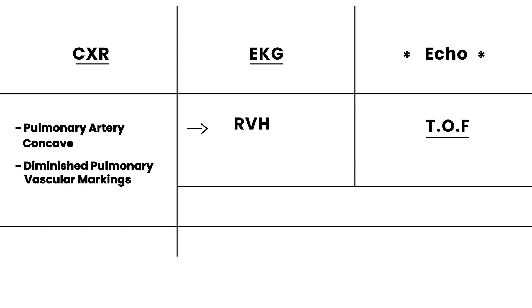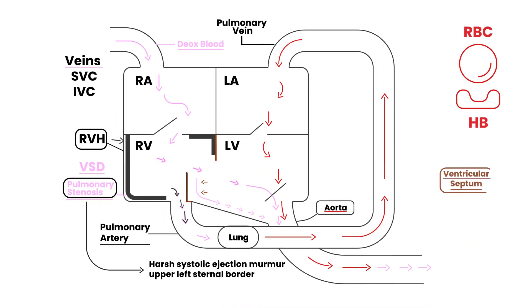The treatment of Tetralogy of Fallot is surgical. The ventricular septal defect must be closed with a patch. You also need to resect the stenotic tissue, which relieves the pulmonic stenosis and opens up that healthy, patent valve area — resulting in much more space for blood to flow through. It's a surgical treatment.